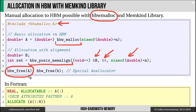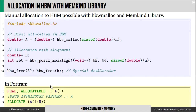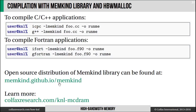In Fortran, I can also selectively allocate in HBM. For that, I will need to use allocatable arrays declared with the attribute fast_mem. When I call allocate, these arrays will go to high bandwidth memory. It is important that when compiling with Intel compilers or with GCC — whether compiling C or Fortran — I need to use the flag -lmemkind to link the memkind library at compile time.